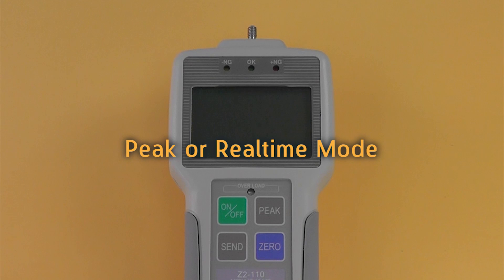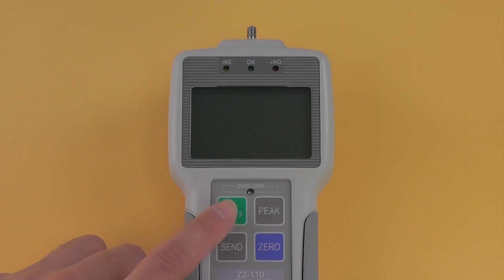Selecting peak or real-time measuring mode. Press on to turn on the gauge and enter real-time measuring mode.